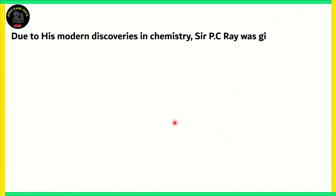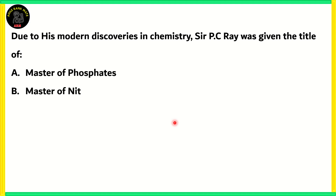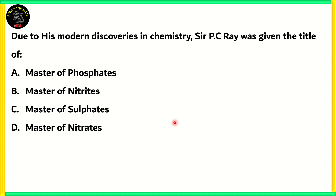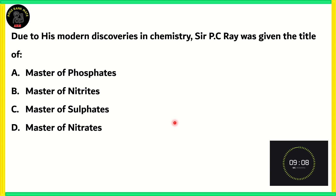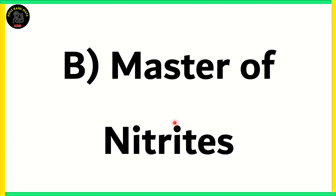First question: Due to his modern discoveries in chemistry, Sir P.C. Ray was given the title of — A) Master of Phosphates, B) Master of Nitrites, C) Master of Sulfates, or D) Master of Nitrates. The answer for this question is B, Master of Nitrites, due to his contributions to chemistry and his modern chemistry discoveries.